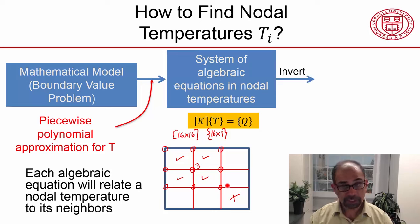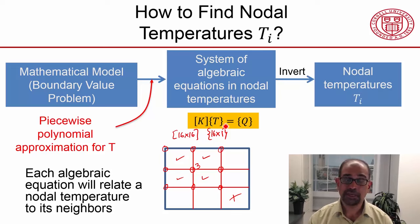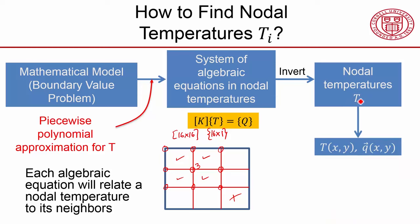It will invert that - that's a matrix inversion problem - and determine the nodal temperatures. So you'll have the 16 nodal temperatures. Everything else is calculated from those nodal temperatures in the post-processing. For instance, you can find the temperature at any location through interpolation from the nodal temperatures, and then you differentiate that to get the heat flux.